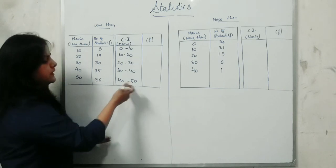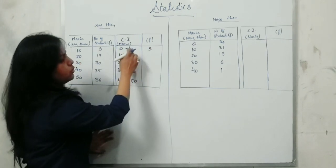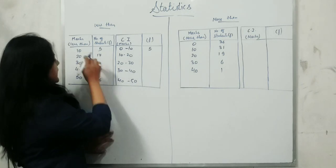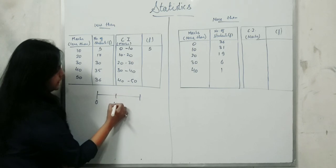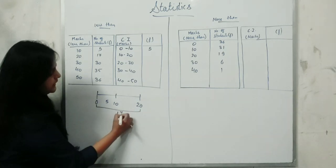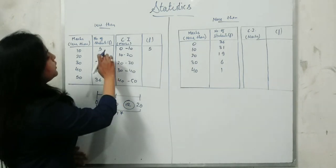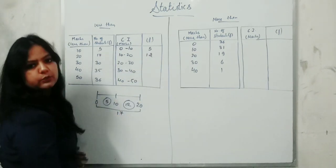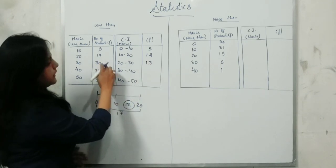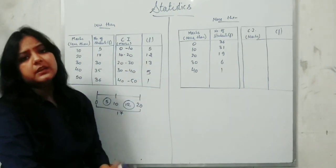Less than 50 means values smaller than 50, so 40 to 50. Now, the first number you write as-is. For the second class interval — if from 0 to 10 the frequency is 5, and from 0 to 20 it is 17, then the space 10 to 20 gives you 17 minus 5 = 12. So directly subtract: from 17 subtract 5, write 12. Then from the next: 30 minus 17 = 13, 35 minus 30 = 5, and then 1. This is how we convert a less-than series into class intervals.